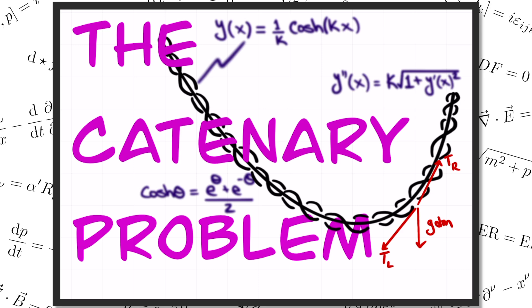The answer goes by the name of a catenary, and after watching this video you'll see catenaries showing up all over the place, from bridges, defenses, and even dangling computer wires.